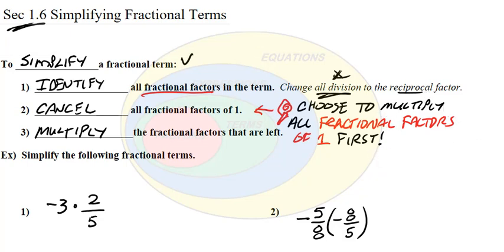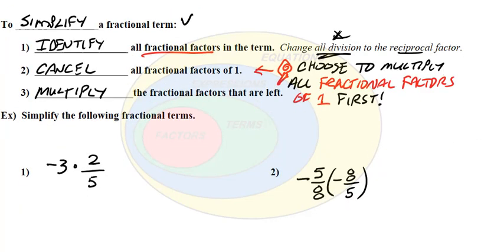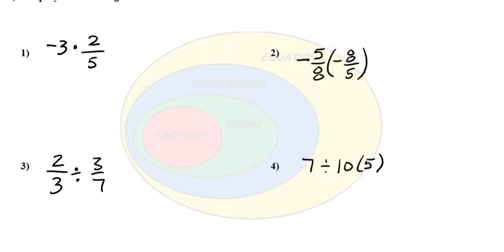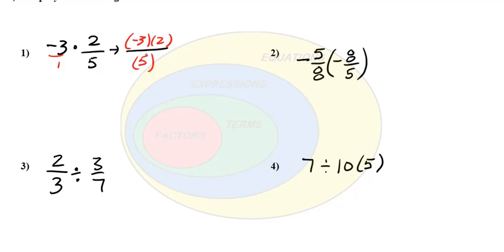Let's simplify the following fractional terms. If we have negative 3 times 2 fifths, this is one term — there's no plus or minus. The factors in the term: we recognize negative 3 as negative 3 over 1, so in the numerator we have factors of negative 3 and 2, and in the denominator a 5. There are no fractional factors of 1 to cancel.